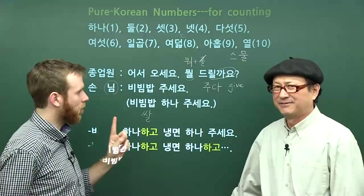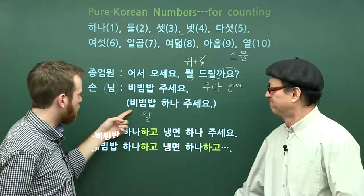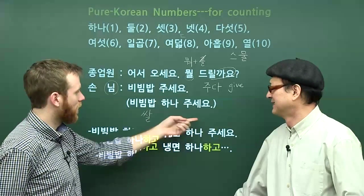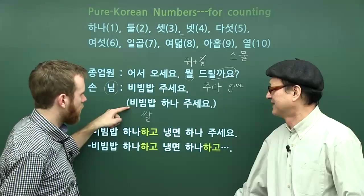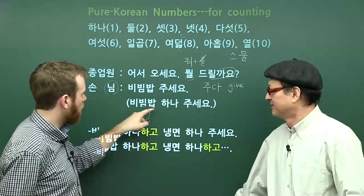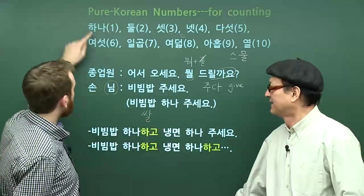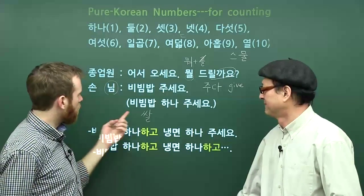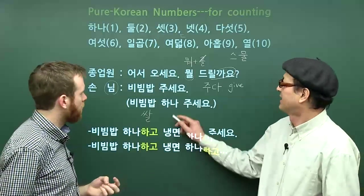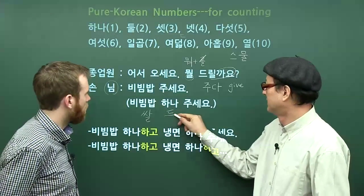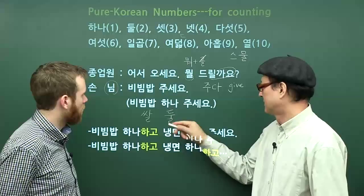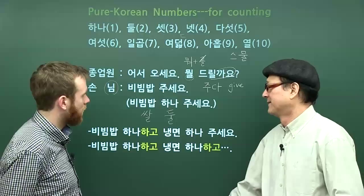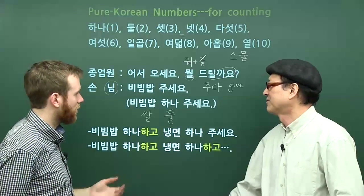One bibimbap, right? But just as often you'll hear someone say 하나 주세요. So 비빔밥 하나 주세요 is exactly the same sentence except with 하나, which means 'one.' If we go back to our numbers, 하나 means one. If I wanted to order two bibimbaps — that would be 둘. Easy enough. Three? 셋. 셋 주세요.